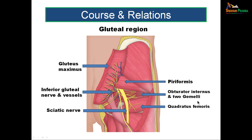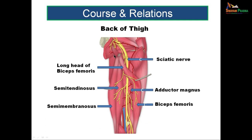Inferior to this, the sciatic nerve lies on the quadratus femoris, which separates it from the hip joint and the obturator externus tendon. It then descends superficial to the adductor magnus and enters the thigh. In the back of the thigh, it is crossed superficially by the long head of biceps femoris, which takes its origin from the ischial tuberosity and goes laterally to unite with the short head forming the belly of biceps femoris. As it descends, the sciatic nerve lies superficial to the adductor magnus, which is in the deepest part of the compartment.